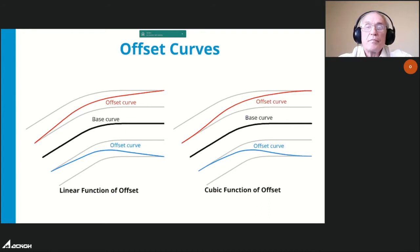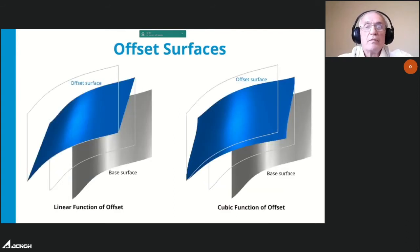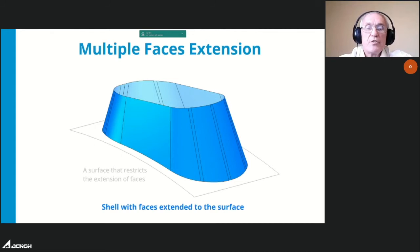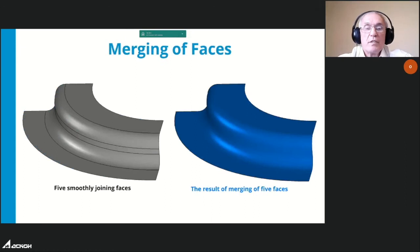The slide shows offset curves with linear and cubic changes of distance. You can now specify different distances for offset surfaces in the corners of the parametric area, changing according to linear or cubic rules for each parameter. The boundary faces extension function has been upgraded to process multiple phases simultaneously — the slide shows the result of simultaneously extending several phases to a given surface.